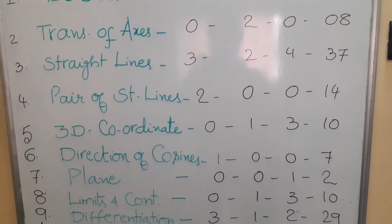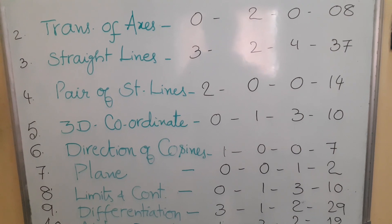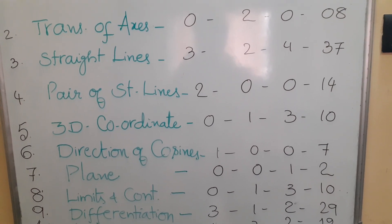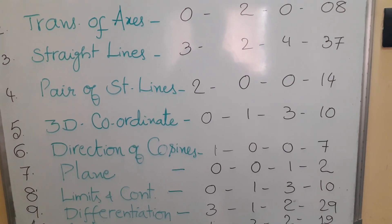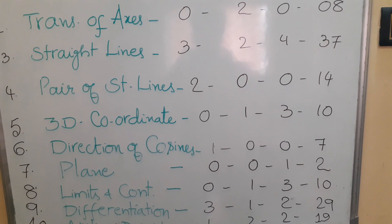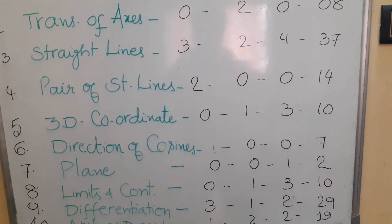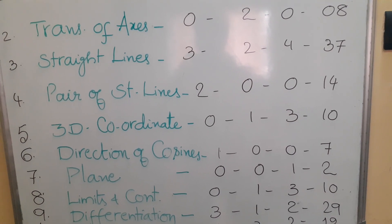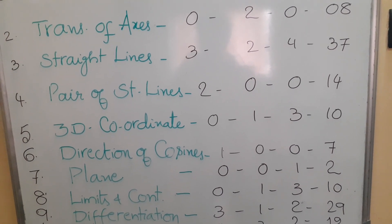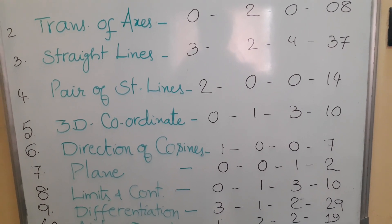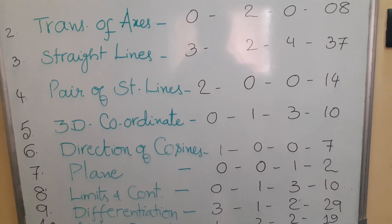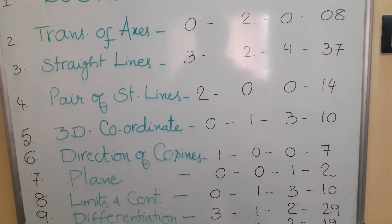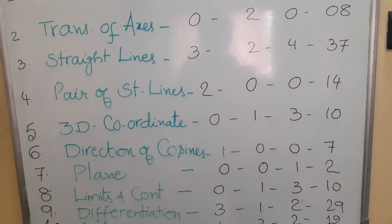Next, the 9th one is Differentiation. For Differentiation: 7-mark questions — 3; 4-mark question — 1; 2-mark questions — 2. So 29 marks weightage is given to this chapter, Differentiation. Second highest weightage is given to this chapter — very important.